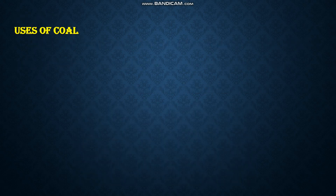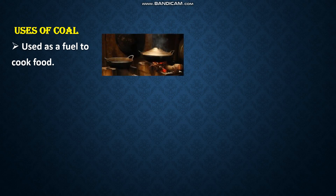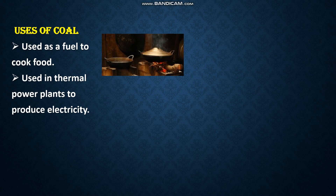Let us see what are the uses of coal. It is used to cook food. It is used in thermal power plants to produce electricity. What are thermal power plants? You have heard about different types of power plants — hydroelectric power plants, thermal power plants, and nuclear power plants.